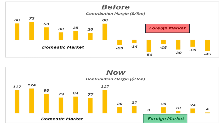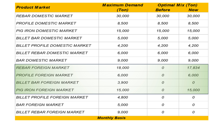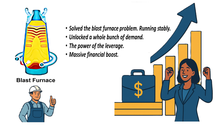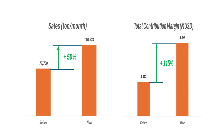So what does the optimal mix model say now? Instantly, the new optimal mix includes selling everything possible domestically and internationally, up to the maximum market demand for all products that now have a positive CMH. They solved the blast furnace problem — keeping it running stably — and simultaneously unlocked a whole bunch of demand they previously had to ignore. The resulting increase in sales volume was about 50%, but the increase in total contribution margin was a staggering 115% — almost double the profit pool overnight from one operational change.